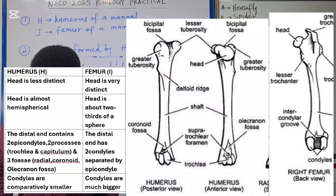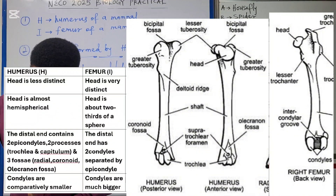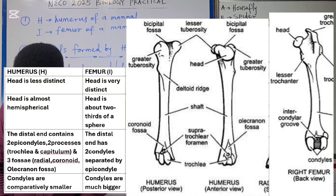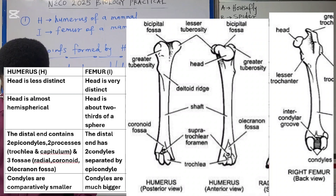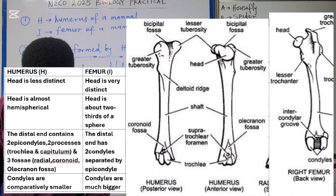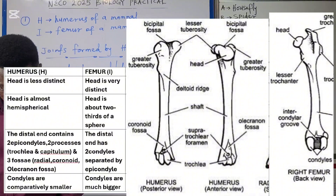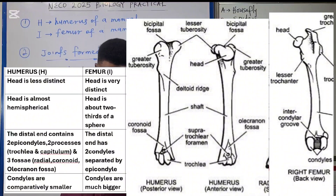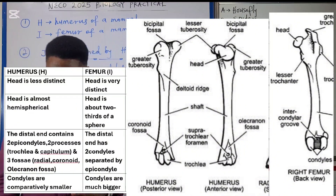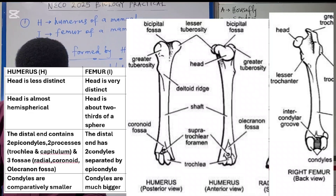At the distal end of the humerus, there are two epicondyles — the trochlea and capitulum — plus three fossae: the radial fossa, coronoid fossa, and olecranon fossa, where it links with the olecranon process of the ulna. The distal end of the femur has two condyles separated by an epicondyle. We were asked for two structural differences but have listed three.